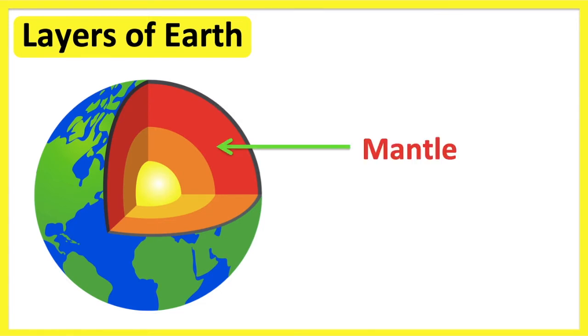The mantle is the thickest section of the earth. This layer is mostly made up of magma. Magma is a semi-molten rock.